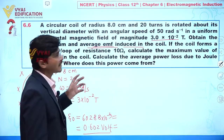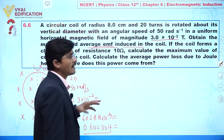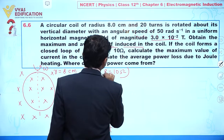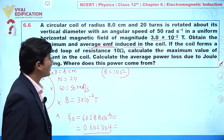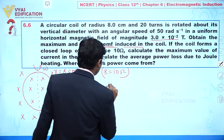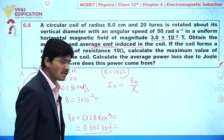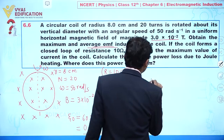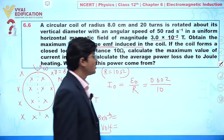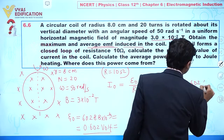Now for the next part: if the coil forms a closed loop with resistance R = 10 ohms, we have to calculate the maximum value of current in the coil. The maximum current is I₀ = e₀ / R = 0.602 / 10 = 0.0602 amperes.